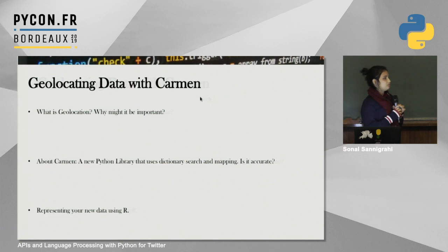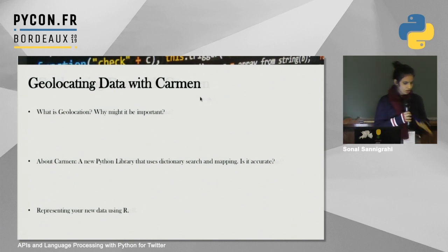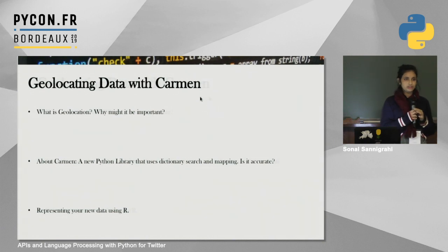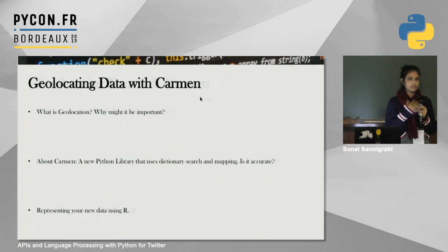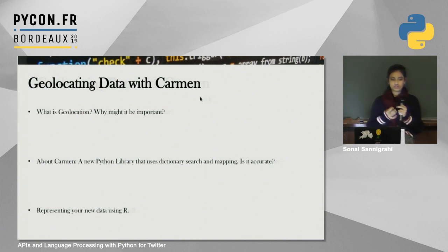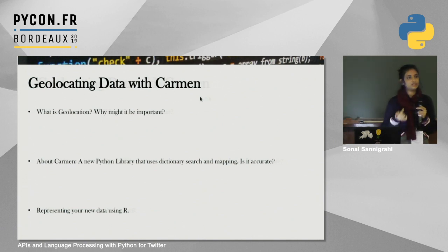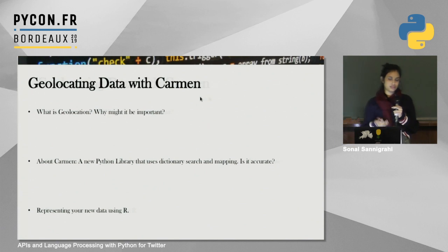Once you have this data, you may want to look at its location. Tweepy allows you to do that. However, not all tweets are geolocated — by default, Twitter doesn't set up a location for your tweets, so there are no GPS coordinates saved unless you choose to enable that. Most people don't notice this and don't add location data, so we generally don't have location data for a lot of tweets.